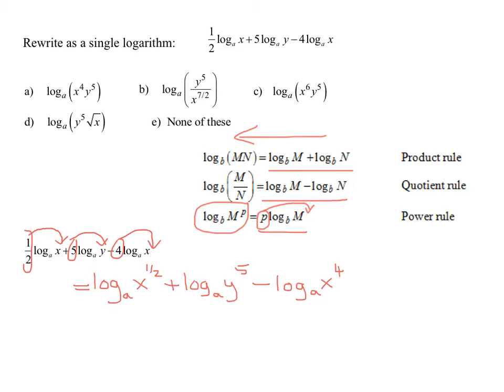So now, do I have a 1 in front of this log? Yes, a 1 in front of this log, and a negative 1 in front of that log. So now I'm ready to use my product rule and quotient rule.